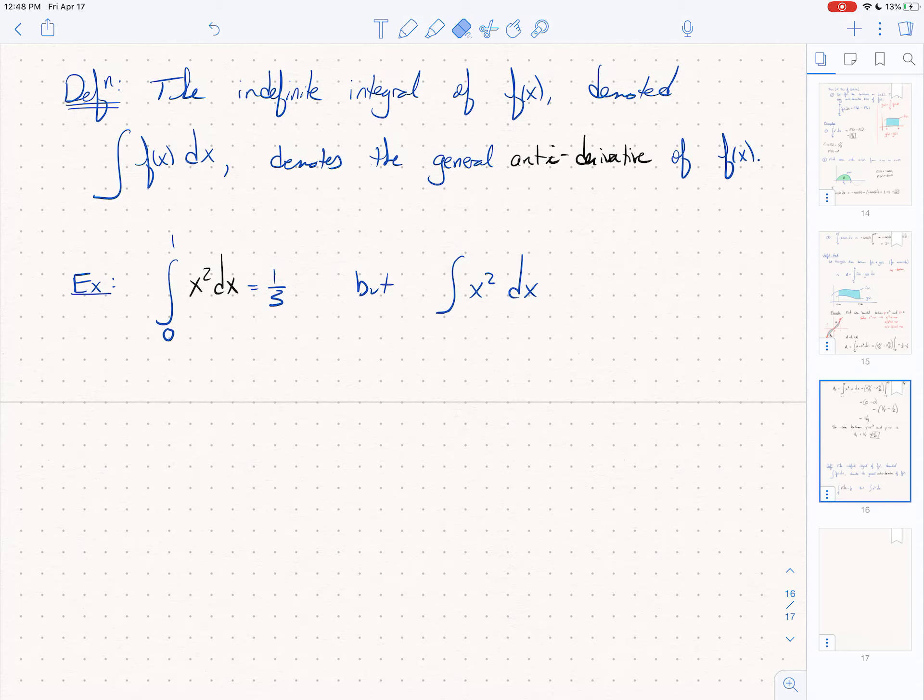First though, I want to introduce you to some notation. Back in chapter 4, we learned about the antiderivative of a function and the general antiderivative of a function, but I didn't introduce to you this notation. The indefinite integral of a function, you just write down the integral symbol of the function, but you don't put bounds on it. There are no bounds. This denotes the general antiderivative of little f.